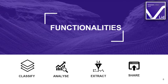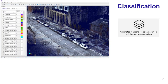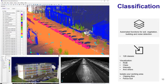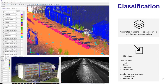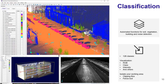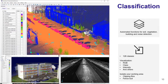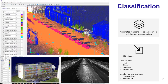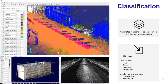Vision LiDAR is divided into four main functionalities: classify, analyze, extract, and share. For classification, you can classify your point cloud into up to 128 classes using multiple automatic functions such as ground or tree detection. To help with classification, you can isolate your working area with a clipping box — which is a 3D isolation — or with a fence tool, which is a 2D isolation of your working area.